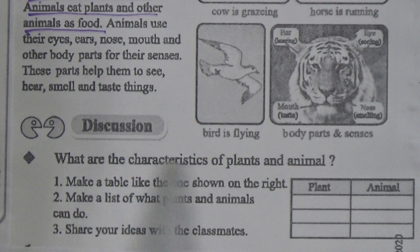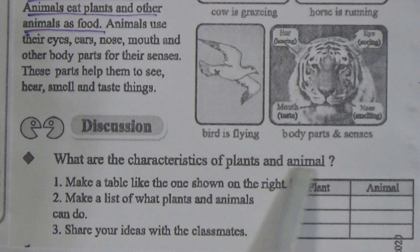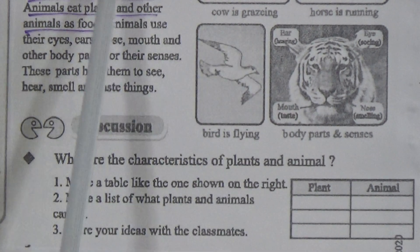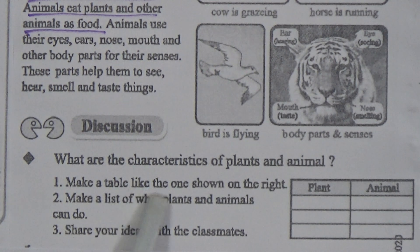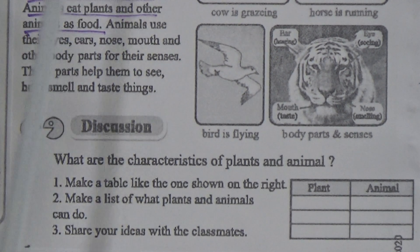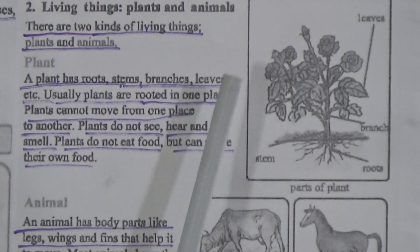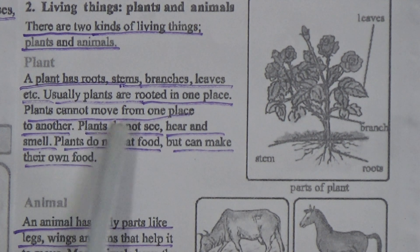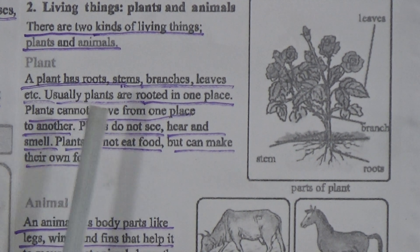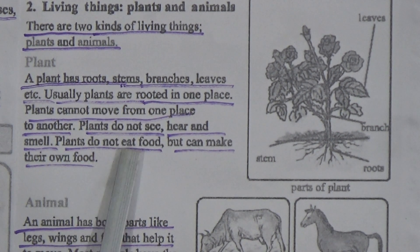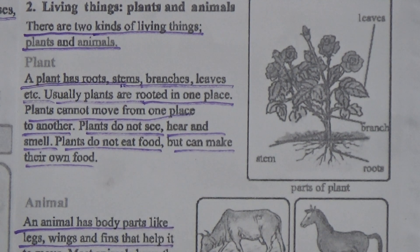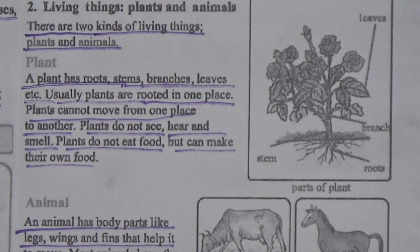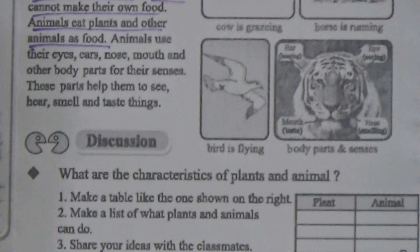What are the characteristics of plants and animals? Plants have roots, stems, branches and leaves. Animals have body parts like legs, wings and fins. Plants can make their own food and animals cannot make their own food. Animals can move freely but plants cannot move from one place to another.